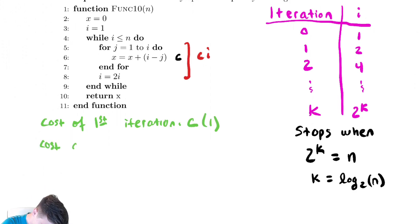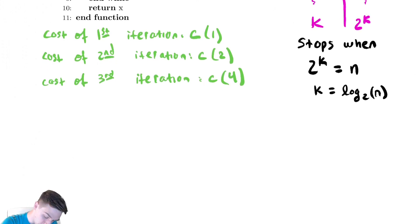The cost of the second iteration is c times the next value i takes. Cost of third iteration would be c times the next value it takes. And we would do this cost of the kth iteration, which is the last iteration based on what we called k earlier, would be c times 2 to the k. But we know what that equals. It's going to be c times n.